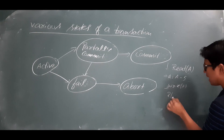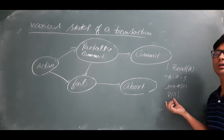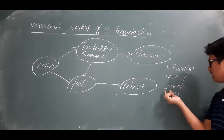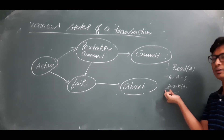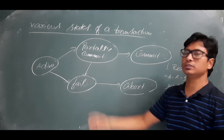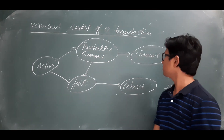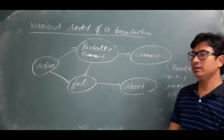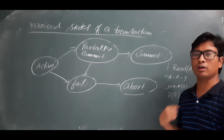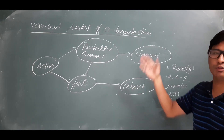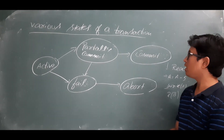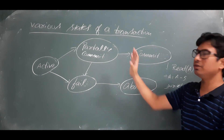After performing partial commit, there is another operation — read B. Because of some problem after partial commit, the transaction failed. So after partial commit also, it can go to the fail state. Once it is failed, it is our duty to do the abort or rollback operation to maintain the atomicity property.